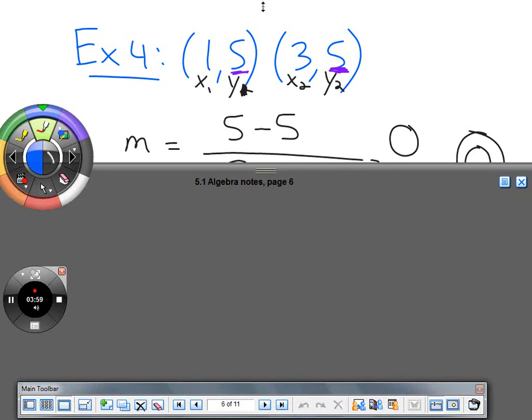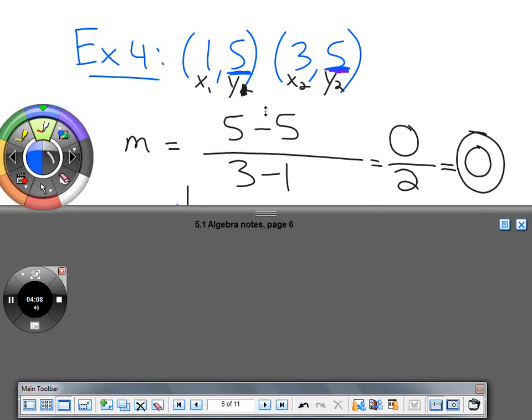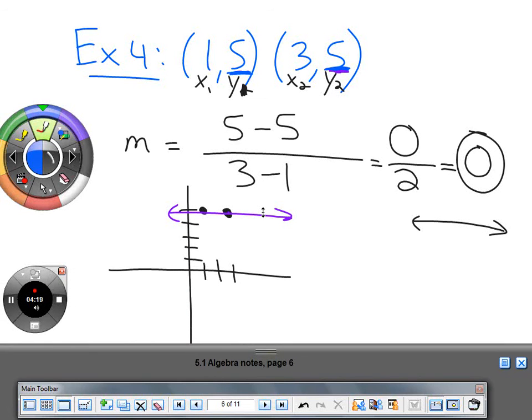When the Y's are the same, we subtract them and get 0 on top. When we get 0 on top and a number on the bottom, the answer is 0. When we graph this, it's always a horizontal line that goes left and right like the horizon. This always occurs when the Y's are the same. Zero slope.